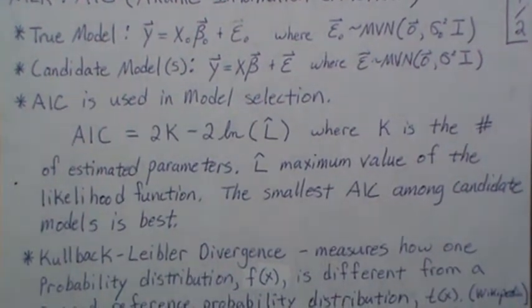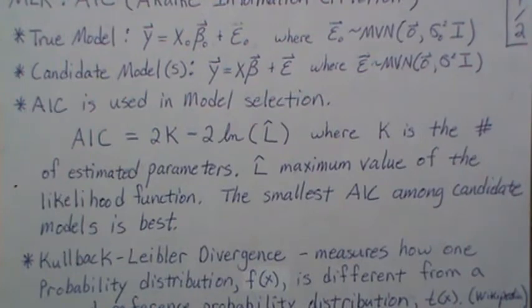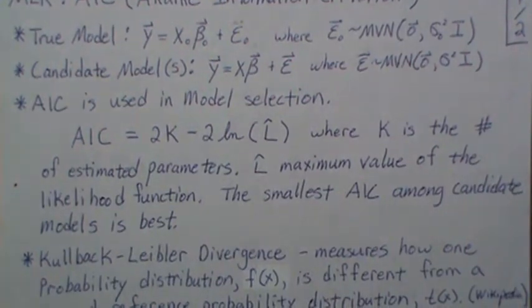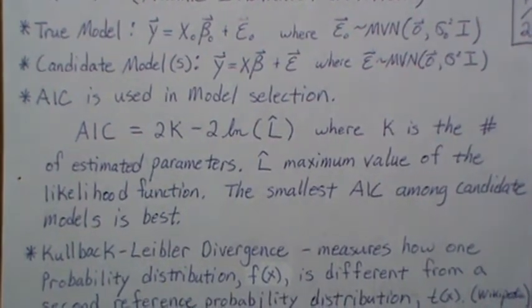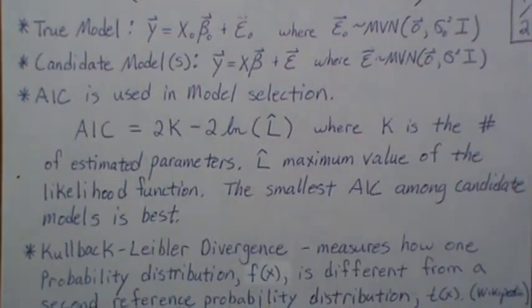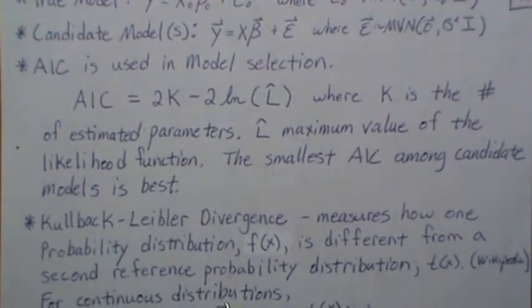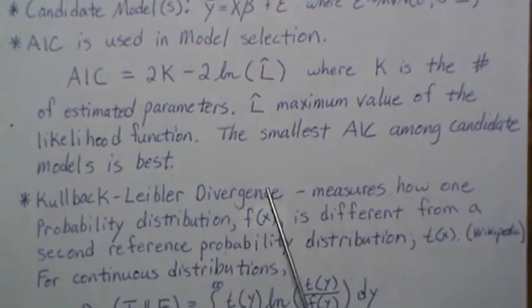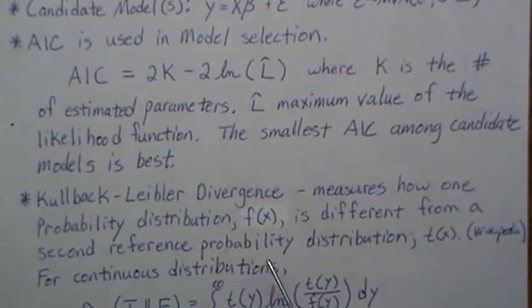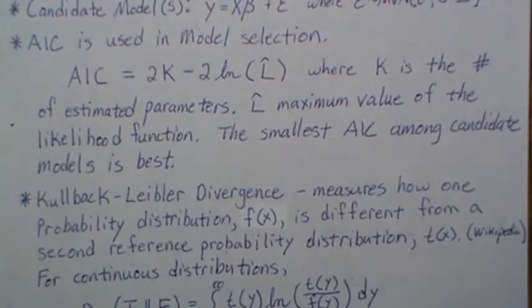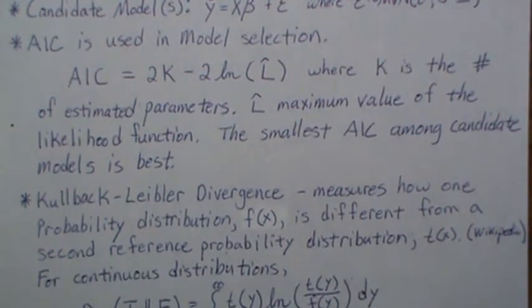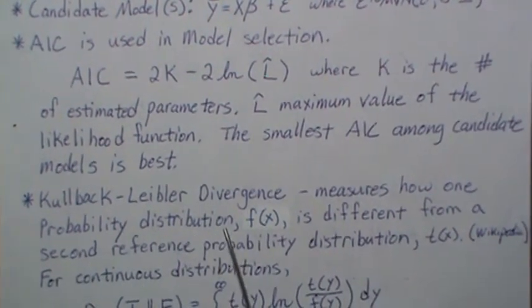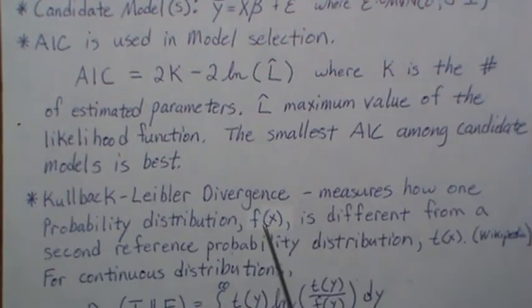I'm going to give some intuition behind this and then specifically go into the multiple regression setting. This is the general formula that works for generalized linear models also. It's based on the Kullback-Leibler divergence—I like divergence because it implies a separation of two things. It measures how one probability distribution is different from a second reference probability distribution.